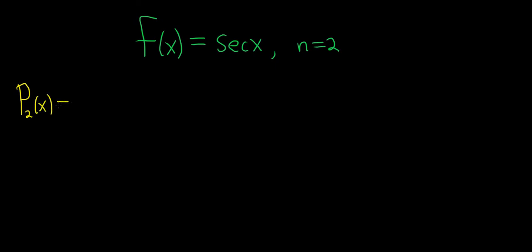It's equal to f of 0 plus f prime of 0 times x plus f double prime of 0 over 2 factorial times x squared.